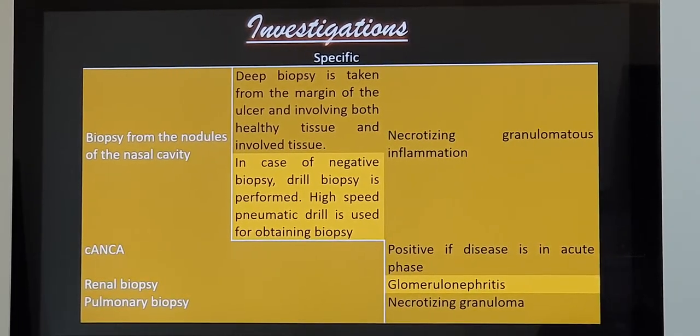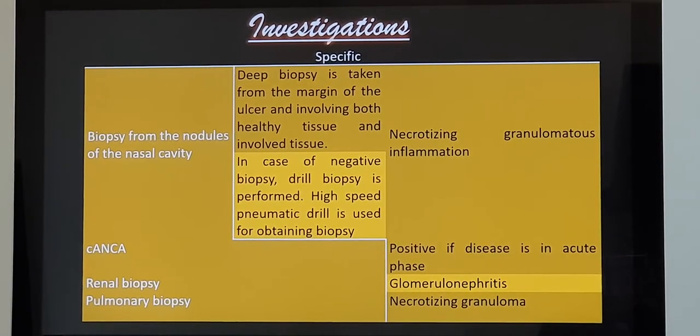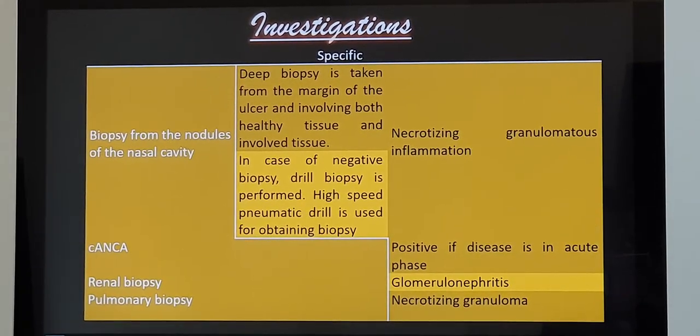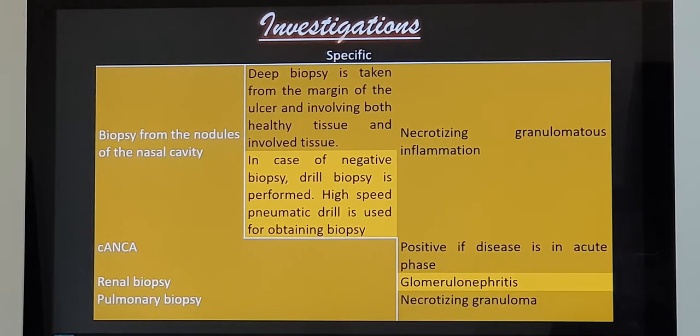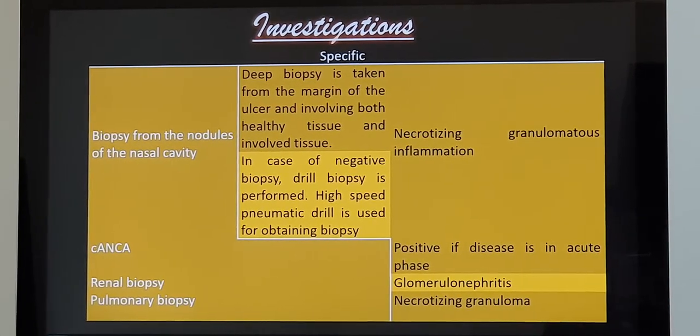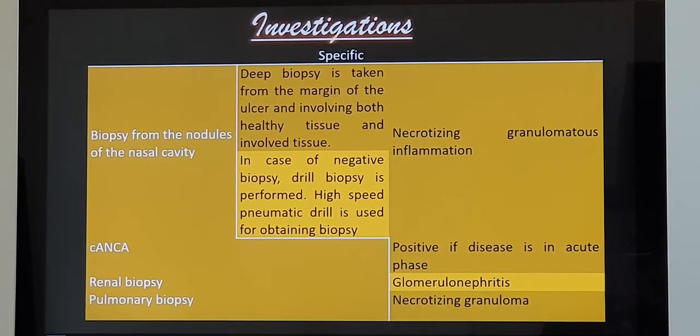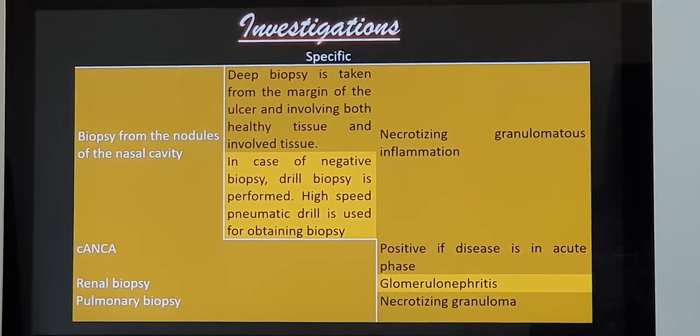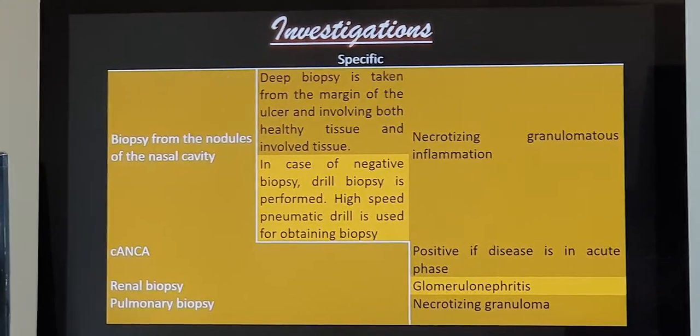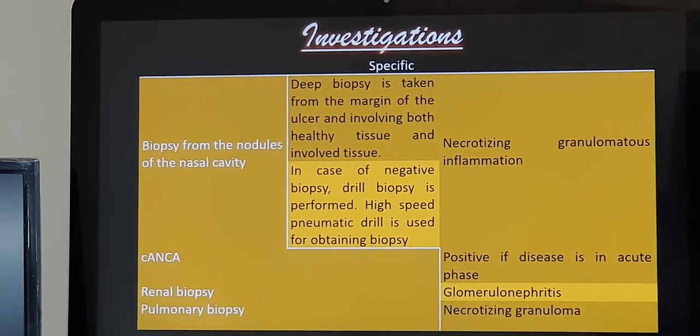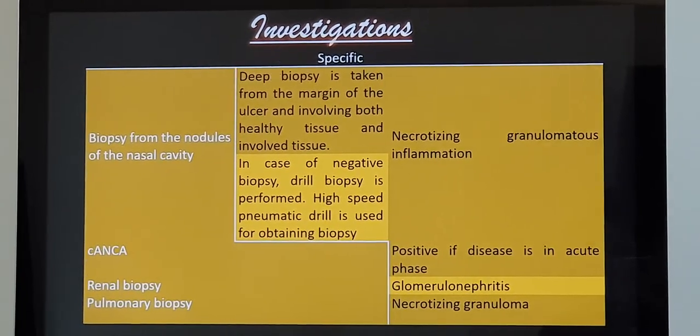And C-ANCA which I have already explained, there's an antibody against neutrophils, it's mainly seen in the active stage. So that correlates well with this. Now biopsy has to be taken from the lung or from the kidney or from the nasal cavity.